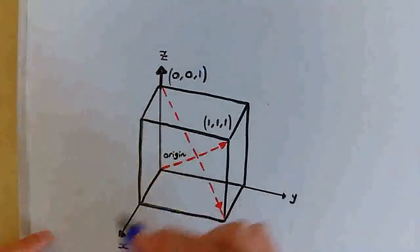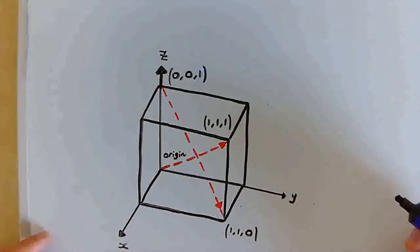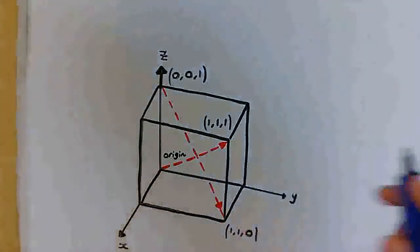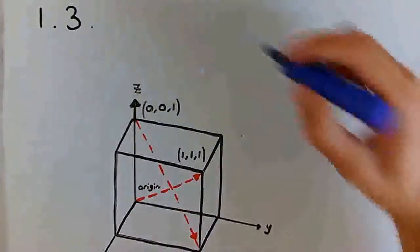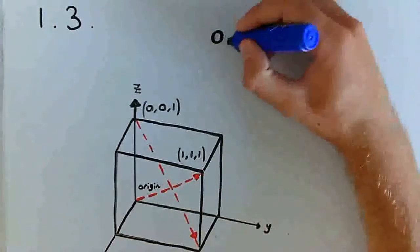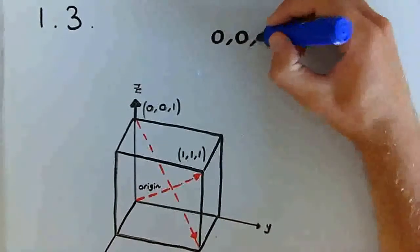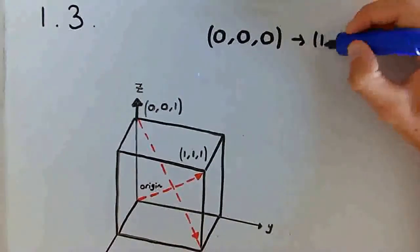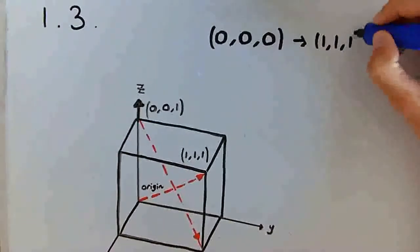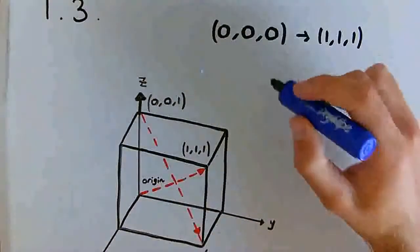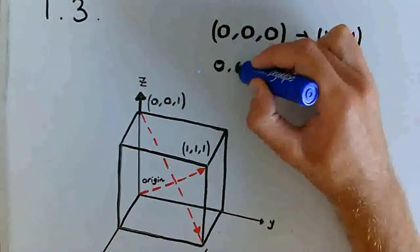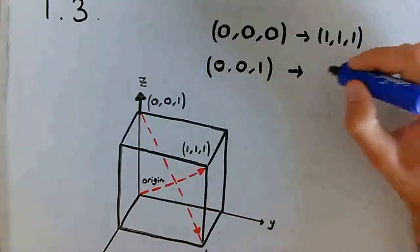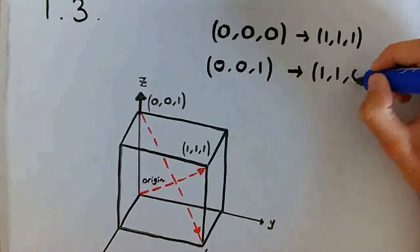I've drawn that here on the x, y, z coordinate system, and I've also drawn in red two body diagonals, one of which is going from the origin at 0, 0, 0, to the point 1, 1, 1, and the other is going from the point 0, 0, 1, to the point 1, 1, 0.